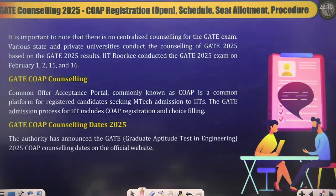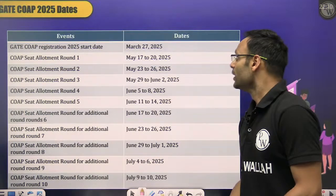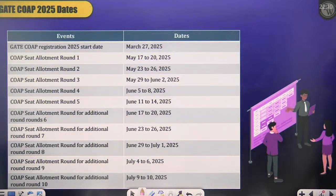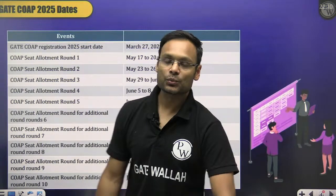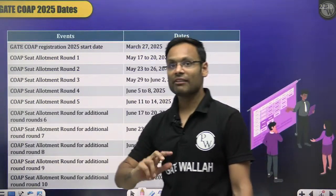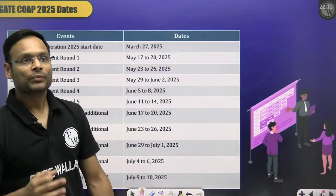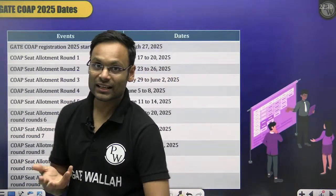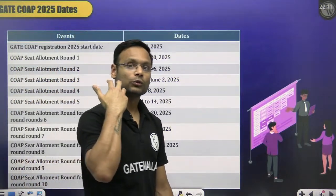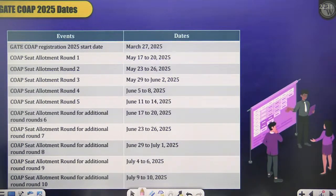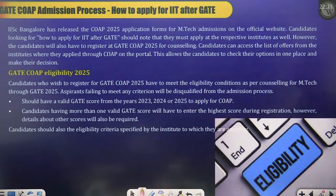COAP registration already started on 27th March. Seat allotment round one will start from 17th May. Before that, all IITs will close their admission portals. Colleges with MTech research or admission processes involving written tests or interviews — like IISc Bangalore for MTech AI, CDS, and Quantum — will complete those processes first. Then counseling rounds one through five follow, with additional rounds continuing till July.